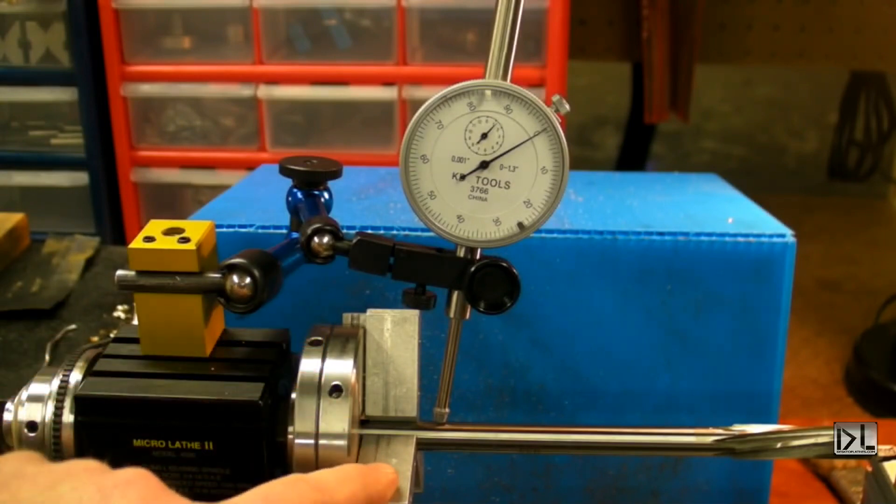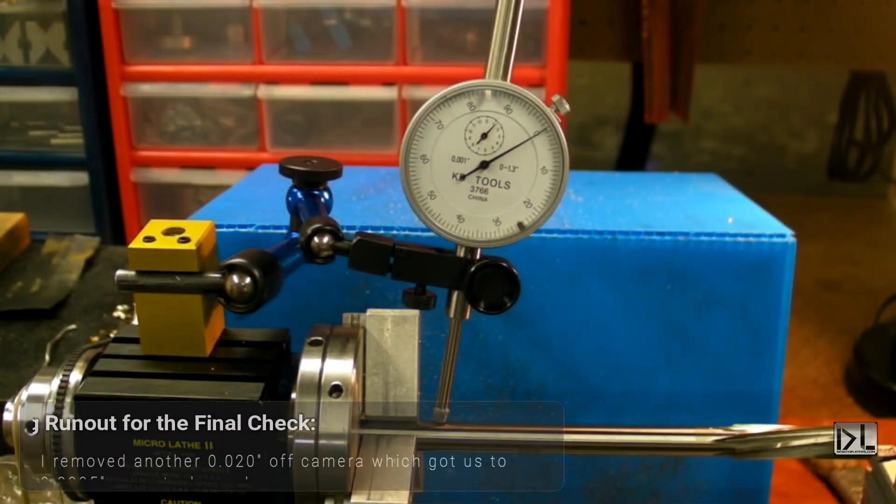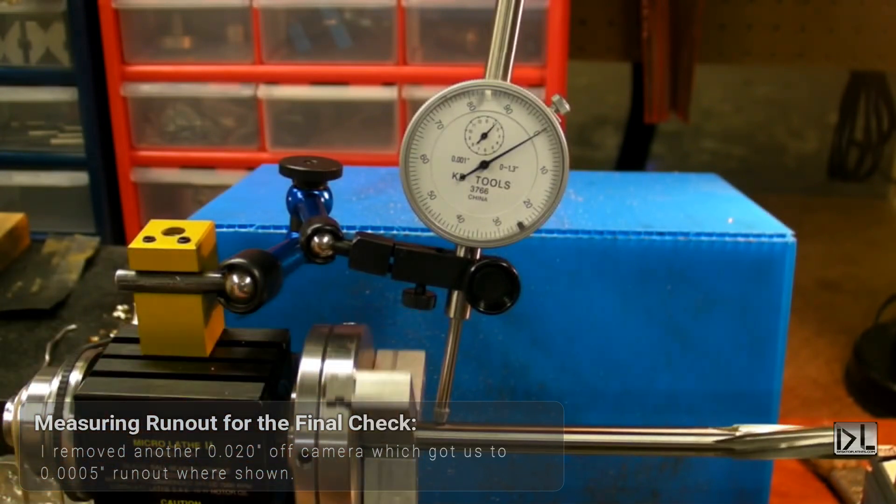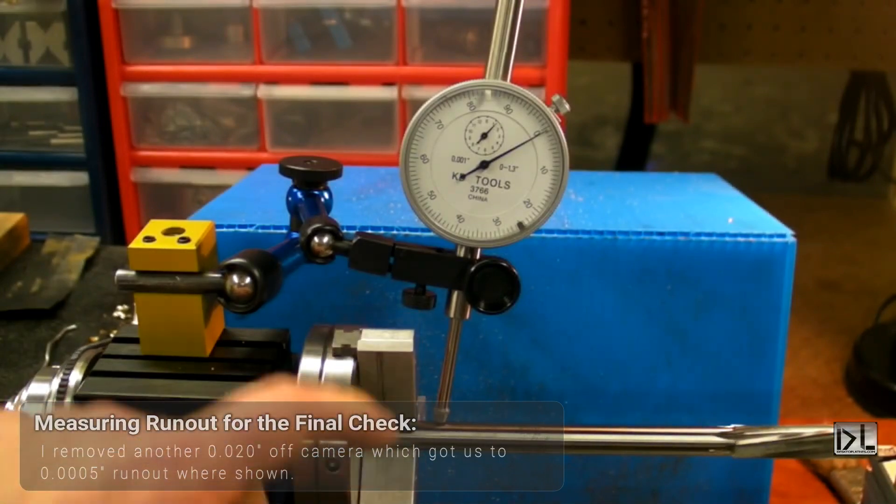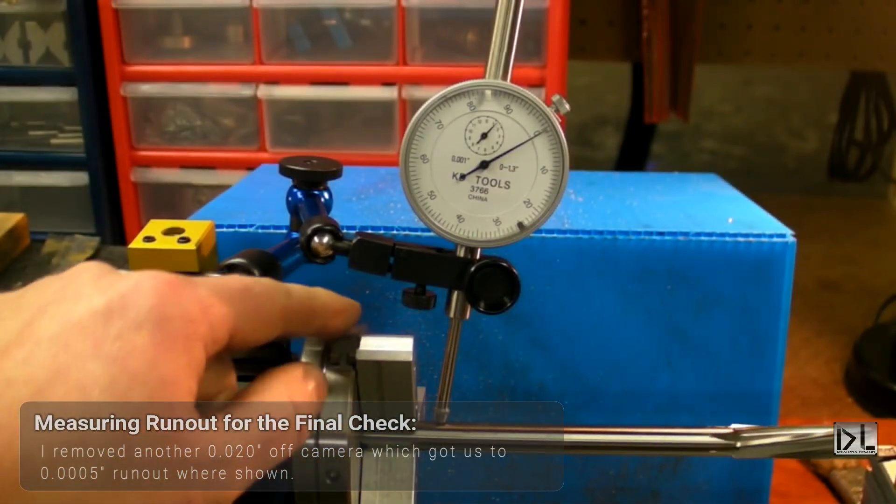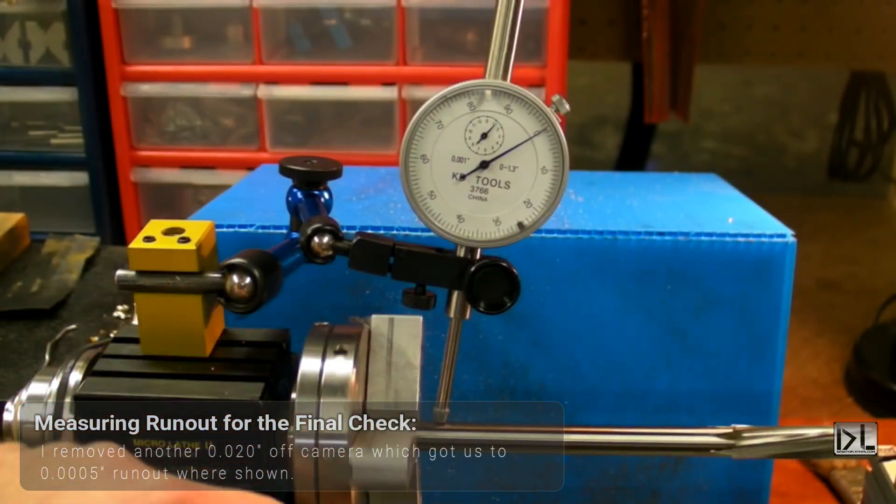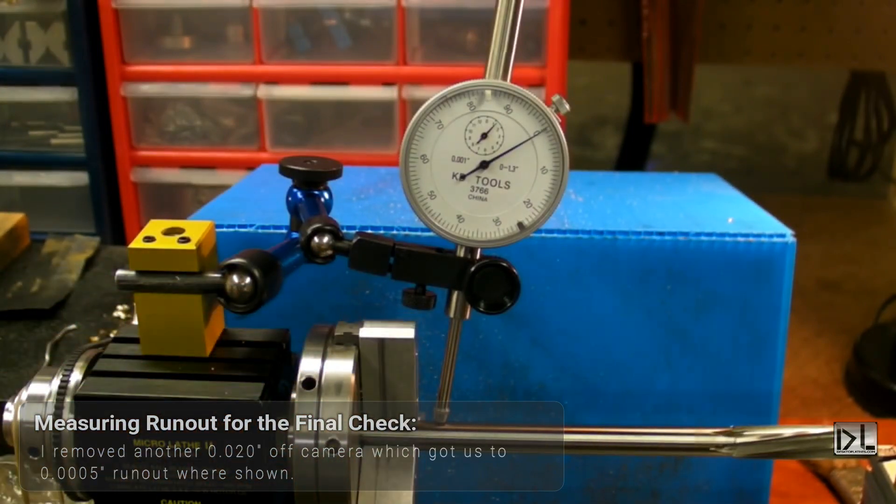Okay, we're measuring run out again after removing the lip. I also had to go ahead and bore out another 20 thousandths or so worth of material to remove that two thou run out we were seeing before. So as you can see the needle moves probably about a half a thousandths as we rotate this reamer, which is what we're after.